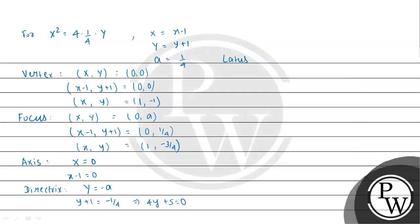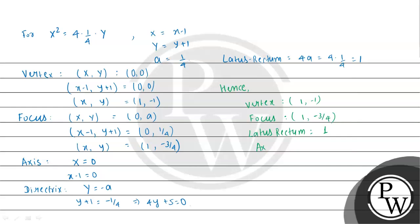The latus rectum length equals 4a, which is 4 times 1/4, equal to 1. So for the given parabola: vertex is at (1, minus 1), focus is at (1, minus 3/4), latus rectum equals 1, axis is x minus 1 equal to 0, and directrix is 4y plus 5 equal to 0.